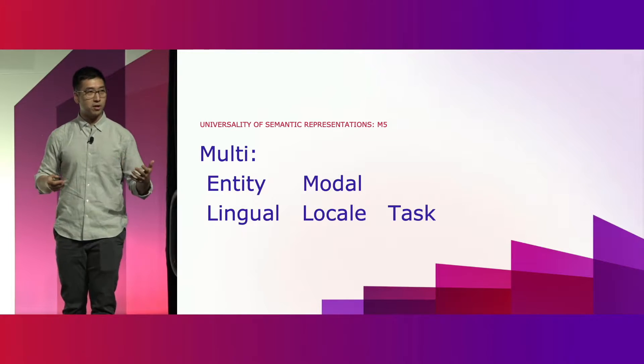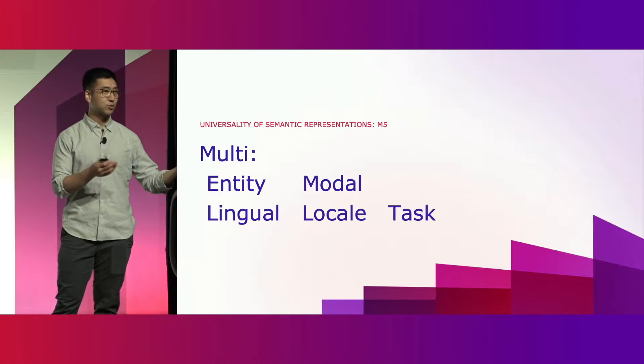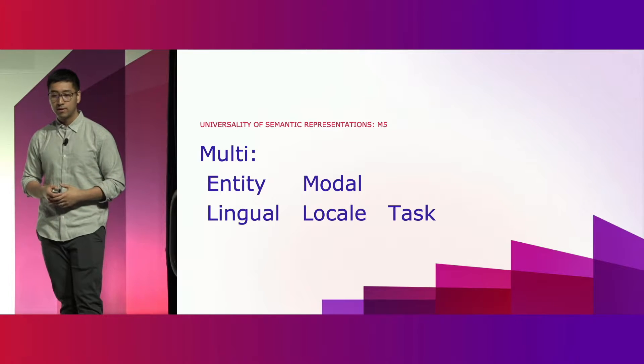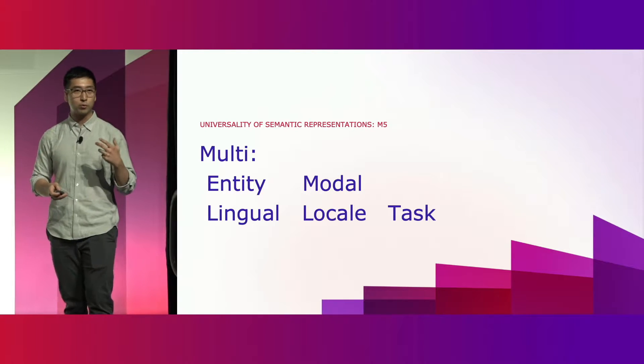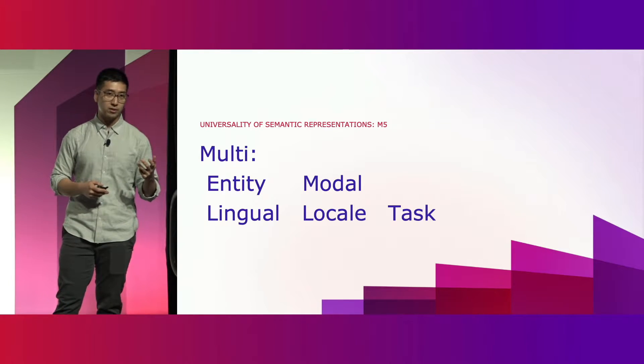The first dimension is entity — there are many entities at Amazon and we want to capture representations for all of them. The second is modality: customers interact with Amazon through text, audiovisual content like images and videos, and speech via Alexa. The third and fourth are lingual and locale, because Amazon is a global marketplace spanning multiple languages and marketplaces. Finally, we want representations to be multi-task, supporting various use cases in the core retail business.